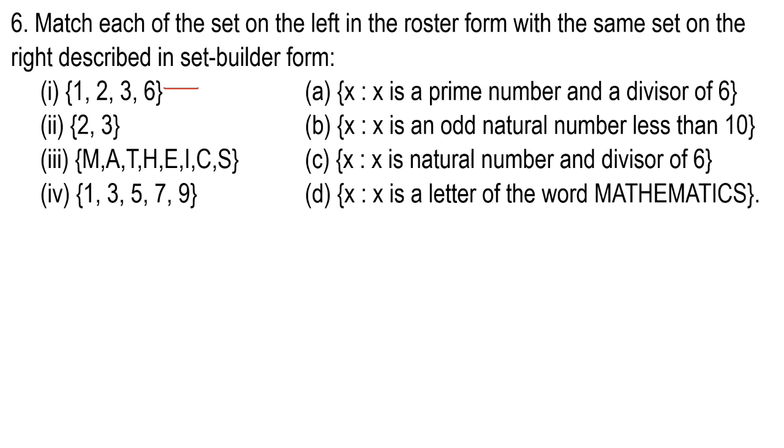Let's check: 1 is a divisor of 6. 2 is 1 and 2. 3 is 1 and 3. 2 is prime and divisor of 6. 6 divided by 2 works. 6 divided by 3 works. So the first one is equal to option C.